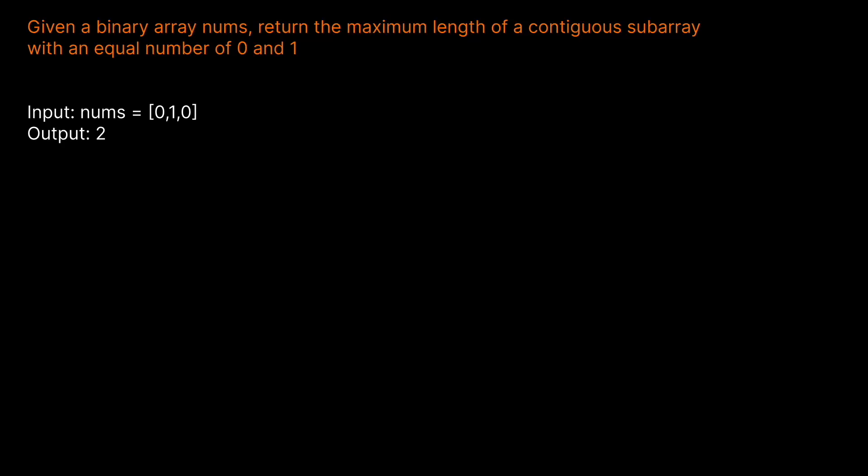Hello and welcome back to the Cracking Fang YouTube channel. Today we're going to be solving LeetCode problem 525, contiguous array. Given a binary array nums, return the maximum length of a contiguous subarray with an equal number of zeros and ones.